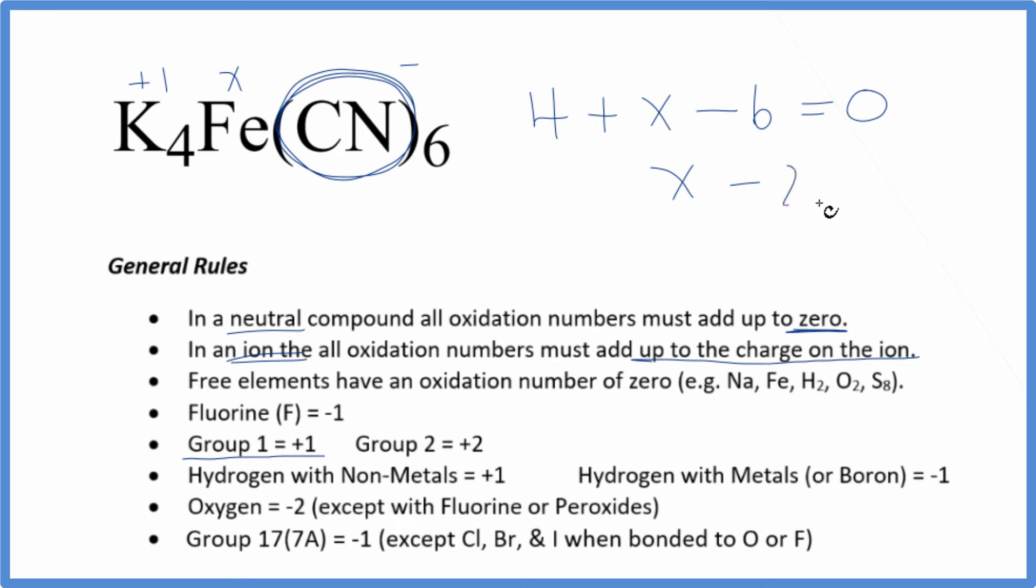X minus two equals zero. And then add two to both sides. X equals a positive two. So the oxidation number on the iron here in this potassium ferrocyanate is a positive two.